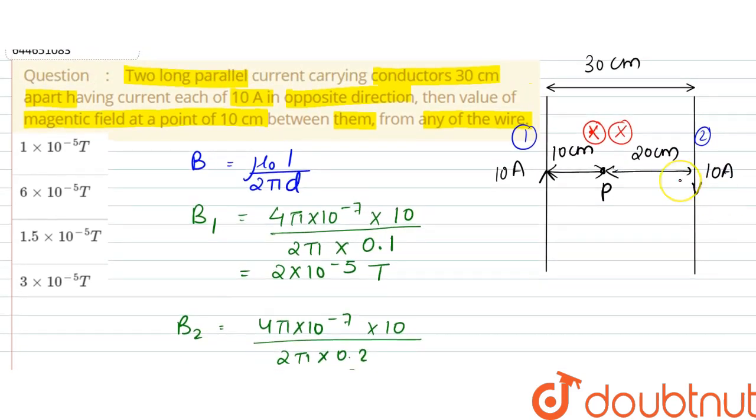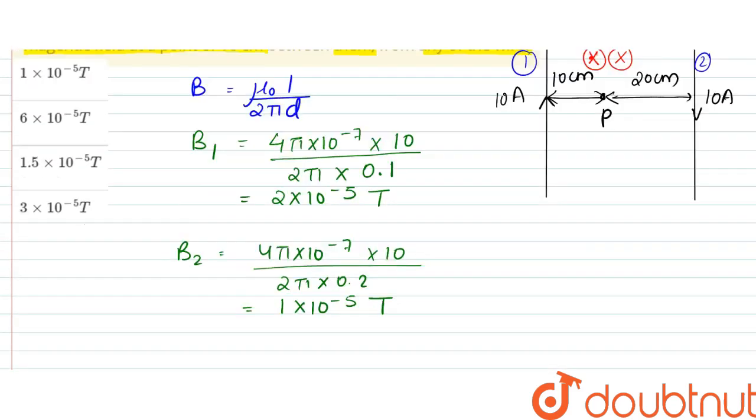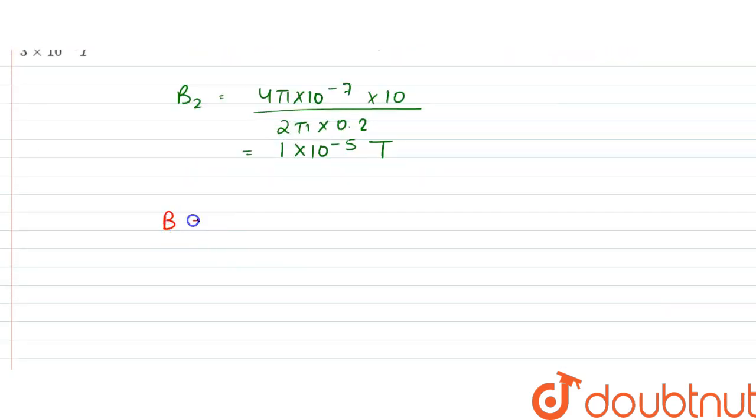So they would add up. So the net magnetic field would be equal to B1 plus B2.